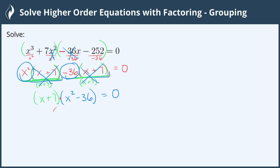We split this into two equations: x + 7 = 0 and x² - 36 = 0. On the left side, we subtract 7 from both sides. Positive 7 minus 7 cancels, so we get x = -7.